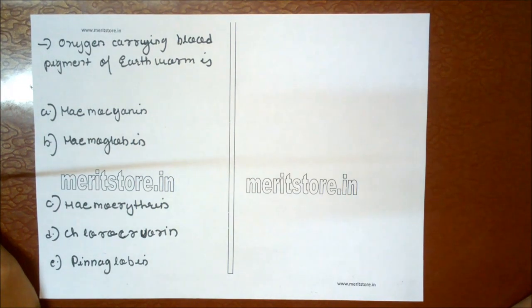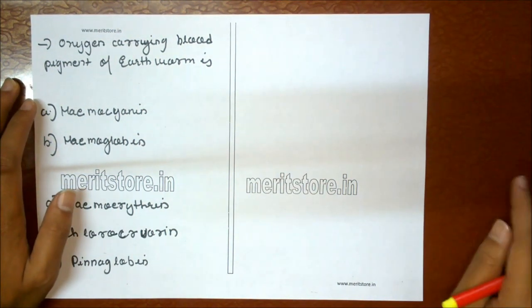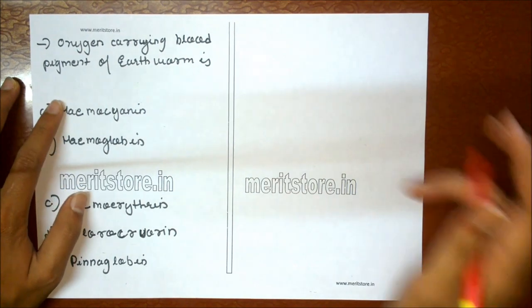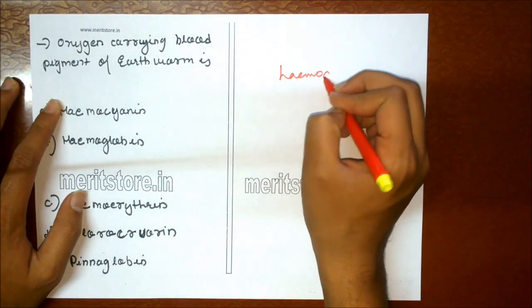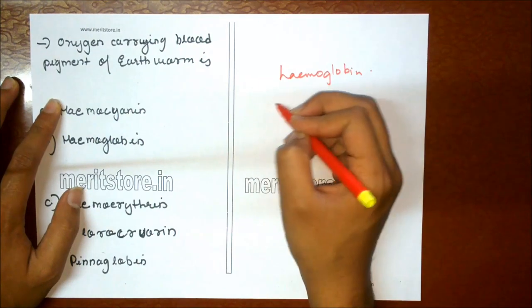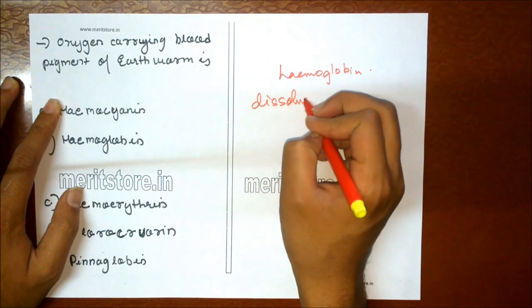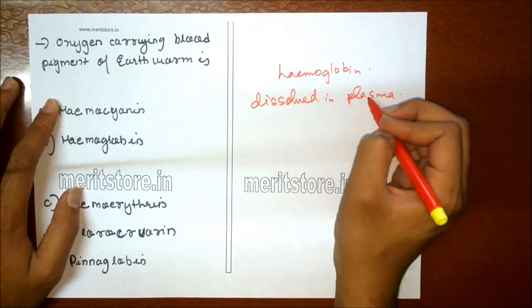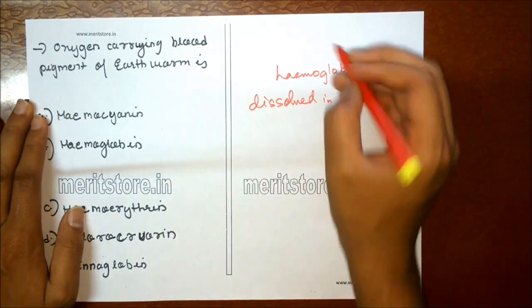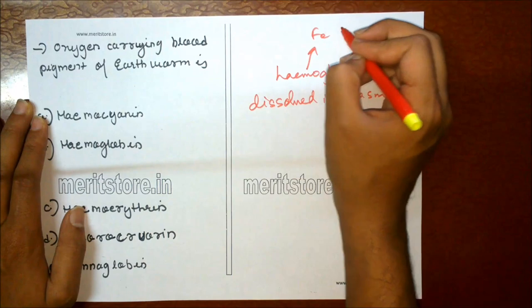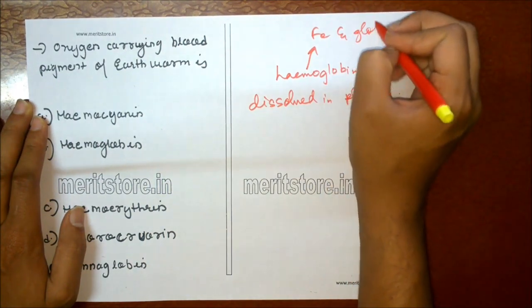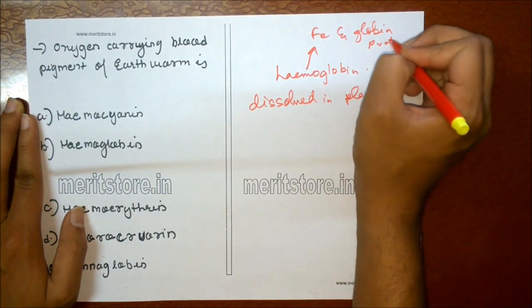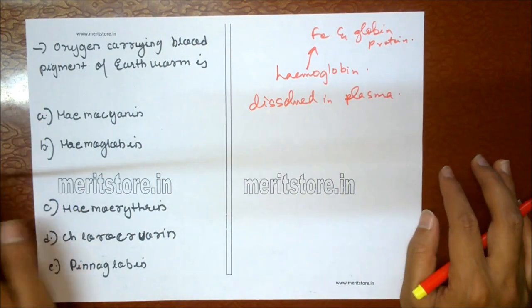Oxygen-carrying blood pigment of earthworm is: A hemocyanin, B hemoglobin, C hemerythrin, D chlorocyanin, E pinoglobin. The oxygen-carrying blood pigment of earthworm is hemoglobin, which is dissolved in plasma. Unlike in humans where cells and plasma are separate, hemoglobin is a combination of iron and globin chain of proteins that carries oxygen and carbon dioxide. Option B is the correct answer.